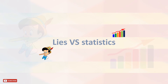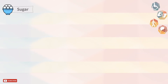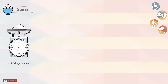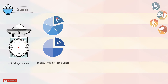Before we end this video series, let's have a look at some information that some consider lies and others consider statistics. Sugar consumption: in some societies, the consumption of sugar is more than half a kilogram per week. Children receive about one-fifth to one-quarter of their energy intake from sugars.